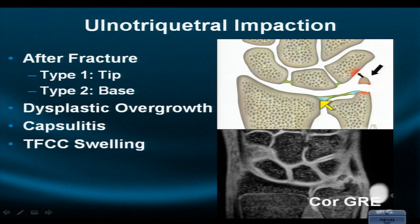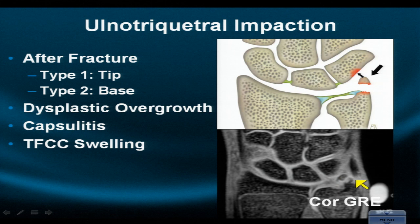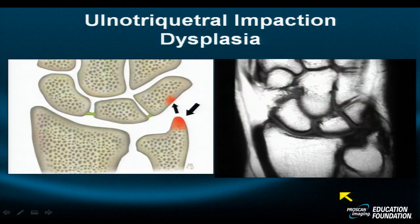As opposed to a gentle defect, which is commonly present, another cause of ulno-triquetral impaction is dysplastic overgrowth or an accessory ossicle, such as that seen here, which is pressed against the triquetrum producing synovial thickening and in this case erosions of the distal ulnar styloid. This capsulitis and generalized swelling is very symptomatic.